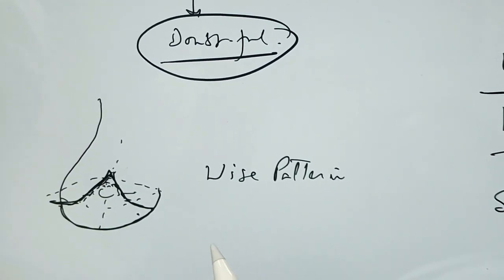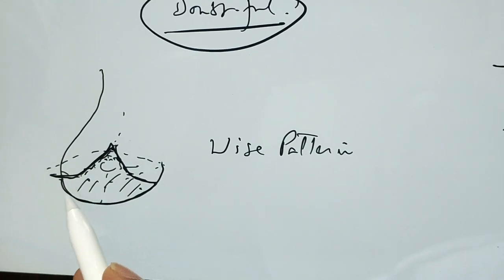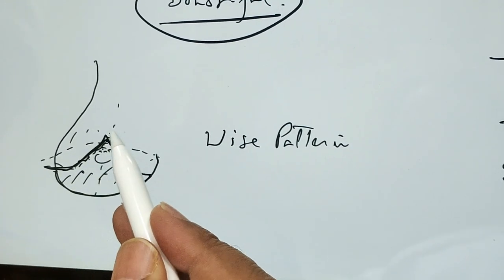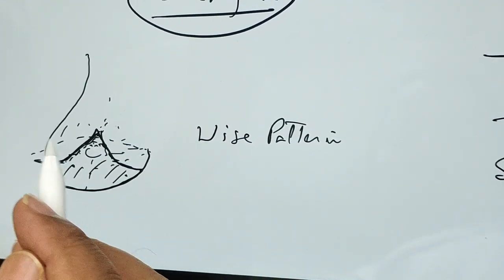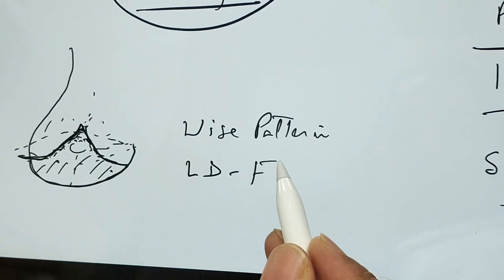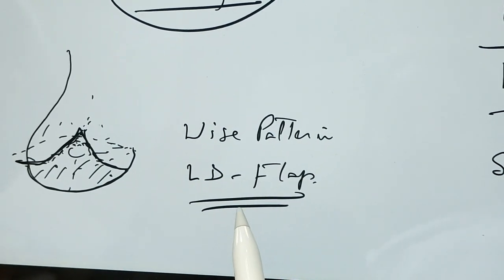Now we didn't have any areola, nothing left. But we had an envelope. This one, and this one will also remain. And in between the two, the breast was removed. So to get some volume, we did LD flap, because she had some volume.